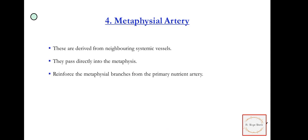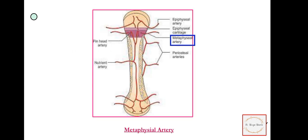Next is the metaphysial artery. These are derived from the neighboring systemic vessels and they pass directly into the metaphyses. They reinforce the metaphysial branches from the primary nutrient artery. Here you can also see the metaphysial artery, they have very clearly and beautifully shown them.